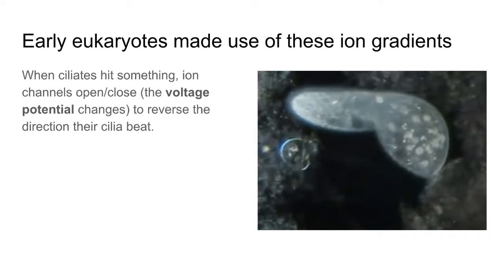What the paramecium does is it will use tactile stimuli — which is just a fancy way of saying if it hits something like a wall — the ion channels within the surface of the cell within the phospholipid bilayer are going to open or close, changing the voltage and the concentration of ions within the cell. The consequence of changing these voltages is a reversal in the direction that the cilia are beating. If they hit something, it means they're going the wrong way and they need to back up. It's a very primitive response, but it alludes to more complex features down the road.